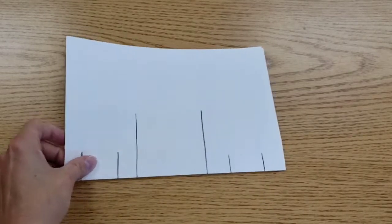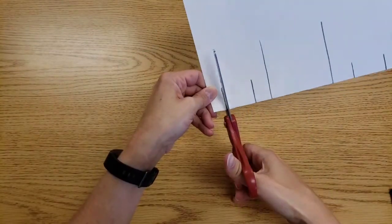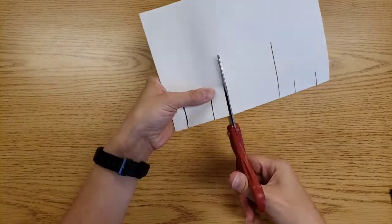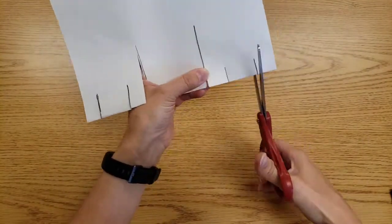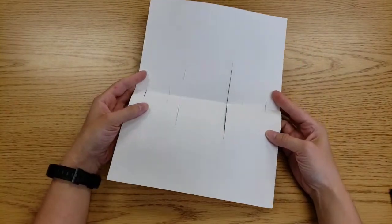Now I take scissors. And I'm going to cut the line. Okay. Now this is what it looks like at the moment.